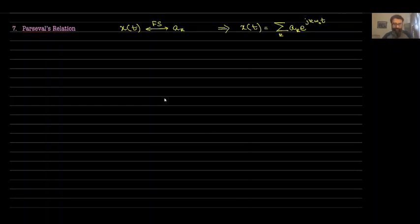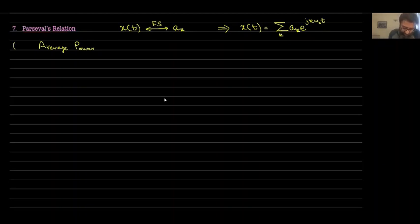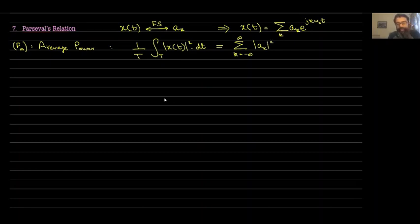The last property we're going to talk about is Parseval's relationship. If X(t) has a Fourier series decomposition with coefficients A_k, what Parseval's relationship tells us is that the average power in the periodic signal X(t) — computed as one over T, integral over the period T of the absolute value squared of X(t) dt — is actually equal to the sum of the absolute value squared of all the Fourier series coefficients. I'm going to give you a proof for this.